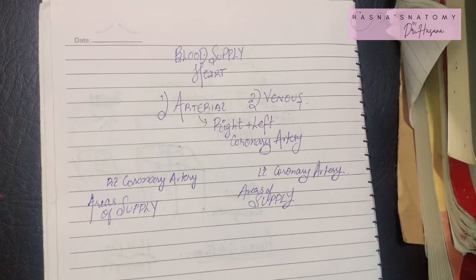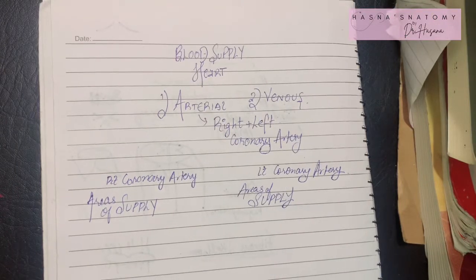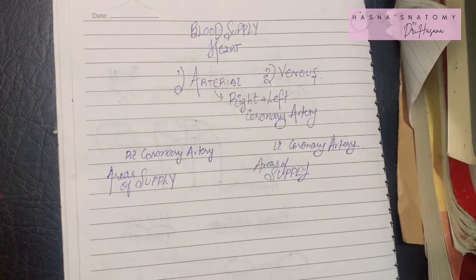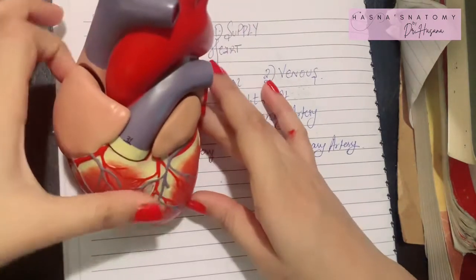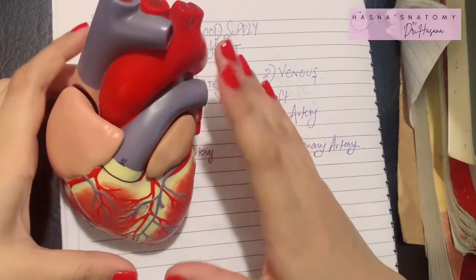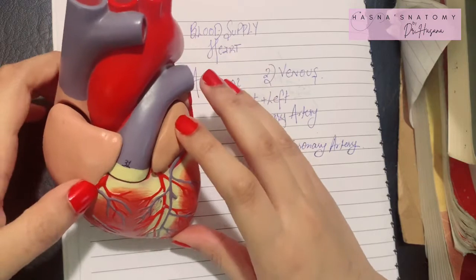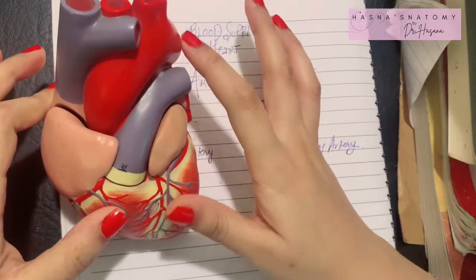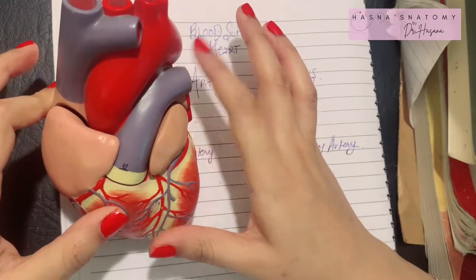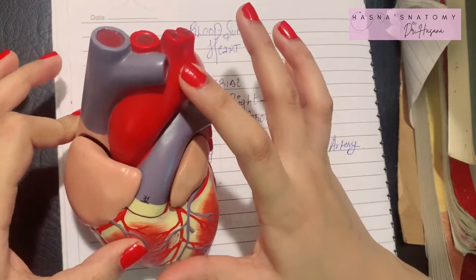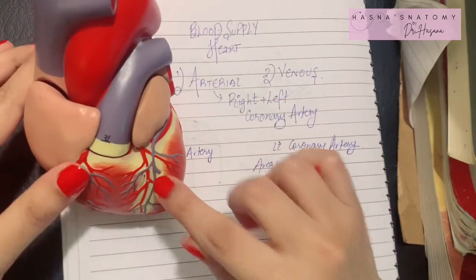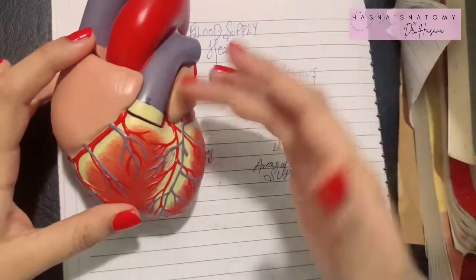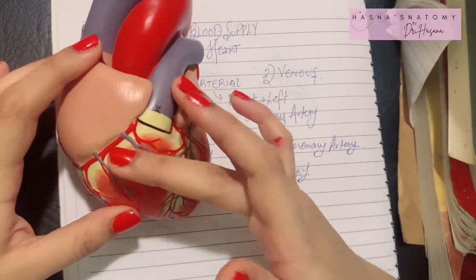Assalamu alaikum, this is Dr. Hasna with Hasna's Anatomy, and today we're going to study the blood supply of the heart. Our heart is an organ that supplies oxygenated blood to the entire body. However, it can't just do that selflessly — it has to be supplied as well, because the heart muscle cannot contract or work without oxygenated blood.